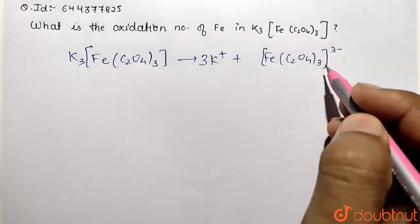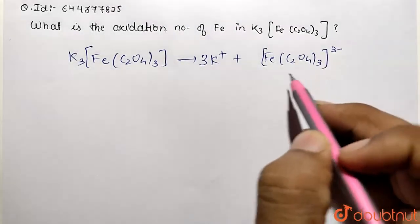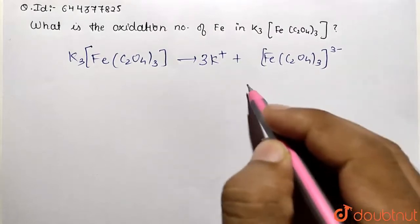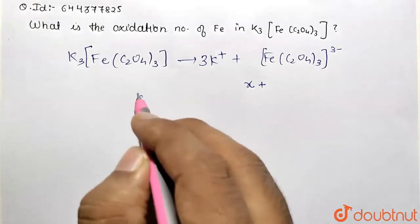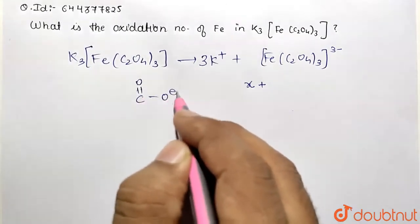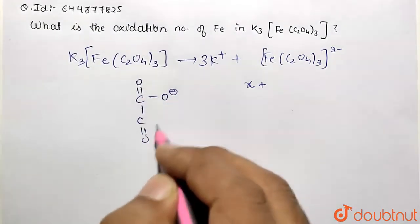Now, how to get the oxidation state of iron? Assume initially it be x. Now, oxalate is a negative ligand. Its structure is like this: one C double bond O, O negative, double bond O negative. So it is a bidentate ligand carrying two negative charges.